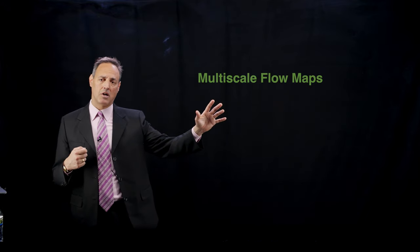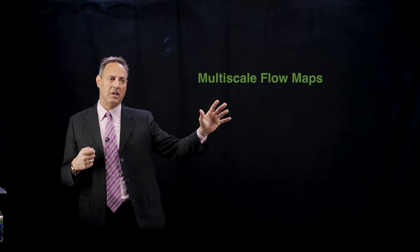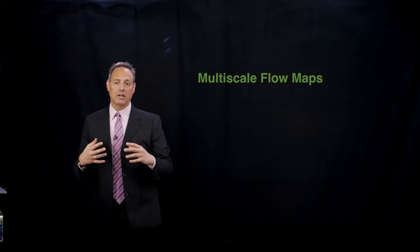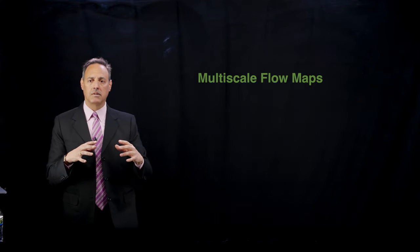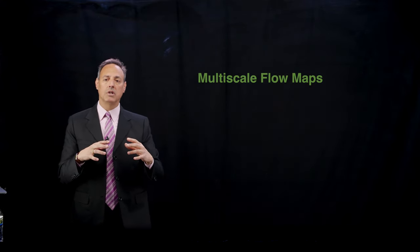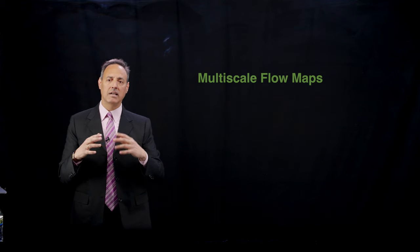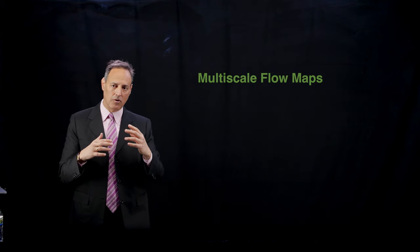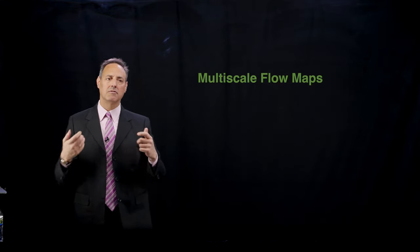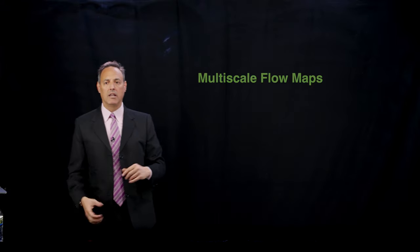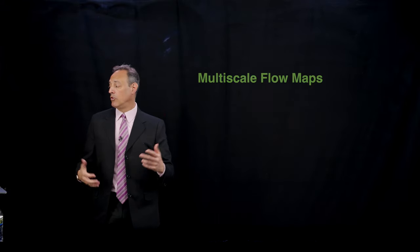This brings us to the topic of multi-scale flow maps. We're going to show here how we can do this using a very nice set of neural network architectures which allow us to actually learn fast, slow, and intermediate scale physics simply by building these flow maps using neural networks.